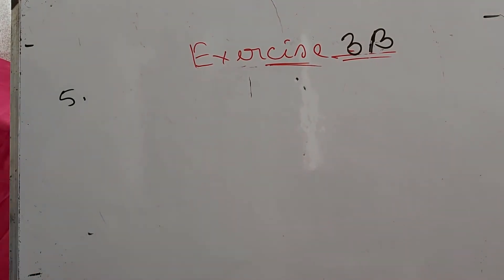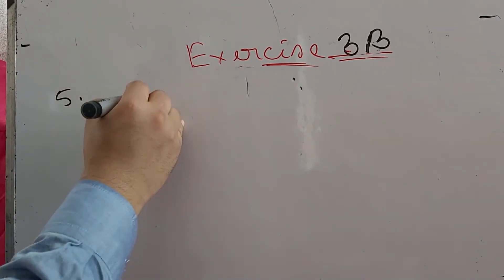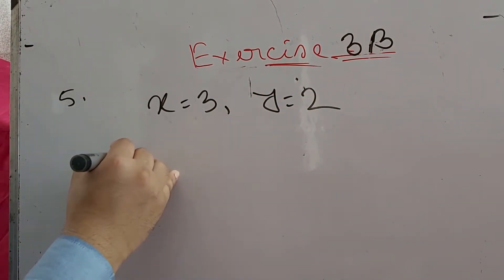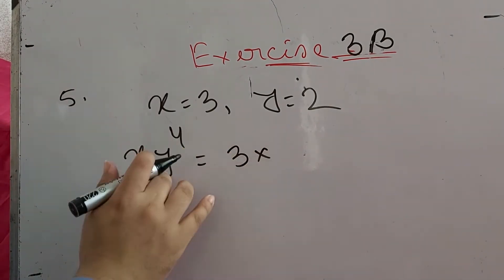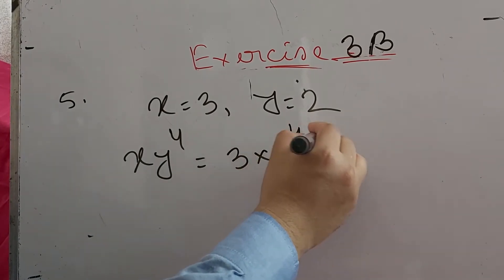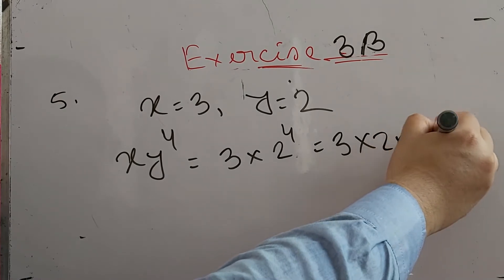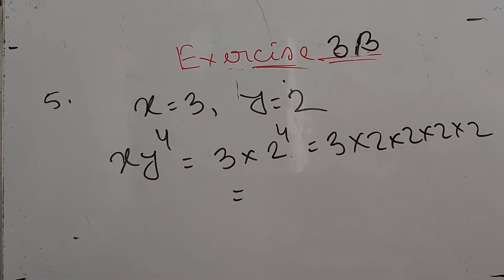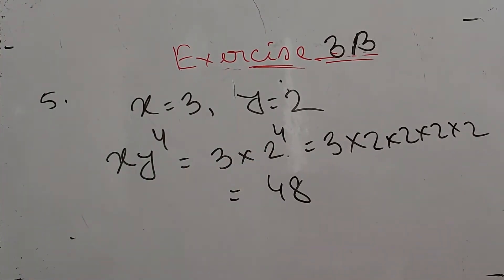Number five says: find the value of x times y to the power four, when x equals three, y equals two. We substitute: x is three, and y to the power four means two to the power four, which is two into two into two into two equals sixteen. So sixteen times three is forty-eight. Forty-eight will be the answer of number five.